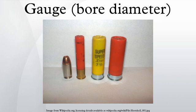Shotgun bores are commonly overbored, or backbored, meaning that most of the bore is slightly larger than the value given by the formula. This is claimed to reduce felt recoil and improve patterning. The recoil reduction is due to the larger bore producing a slower acceleration of the shot, and the patterning improvements are due to the larger muzzle diameter for the same choke constriction, which results in less shot deformation.